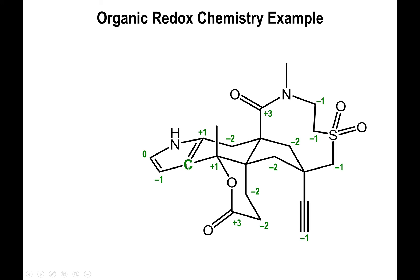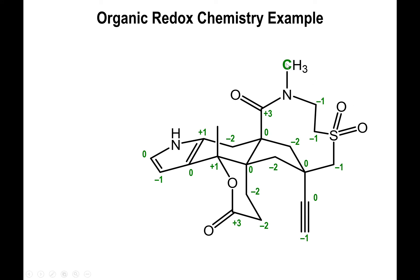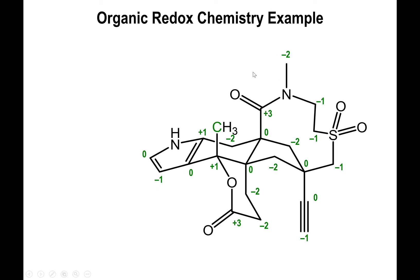The carbon connected to four other carbons is also neutral — zero contribution from all four C–C bonds. Similarly, the next carbon connected to four other carbons is zero. Now the terminal carbon: because it's terminal it must have three hydrogens, each contributing −1, giving −3, but the nitrogen takes away one electron, contributing +1. So −3 + 1 = −2 on that carbon. The other terminal carbon also has three hydrogens, but is connected to another carbon rather than nitrogen, so only the hydrogen effect is felt: a −3 charge on that carbon.